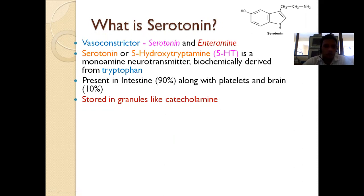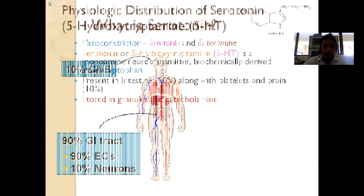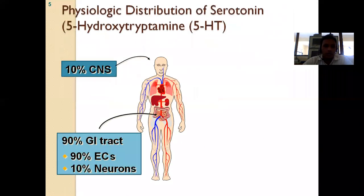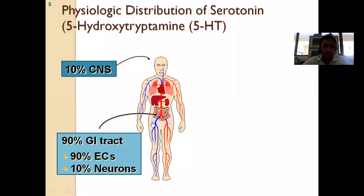Serotonin is stored in granules, like catecholamines. The distribution shows how 5-hydroxy tryptamine is stored in our body — 90% is present in the intestine while 10% is in the CNS.